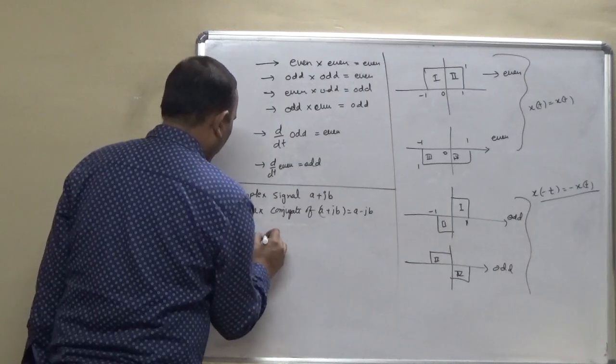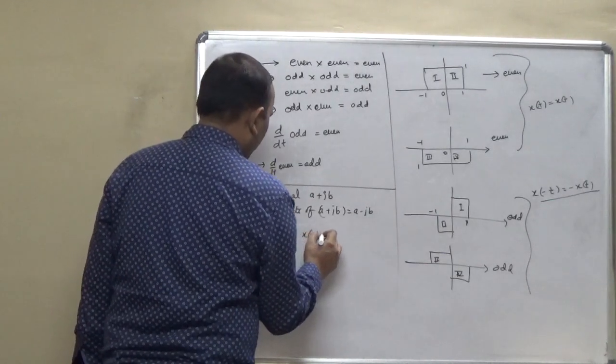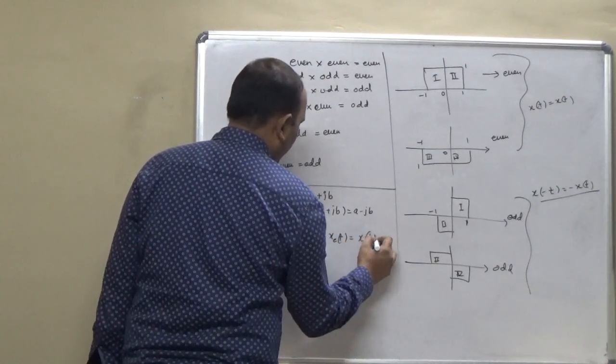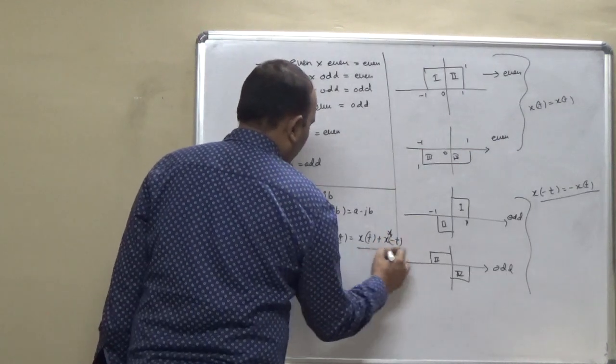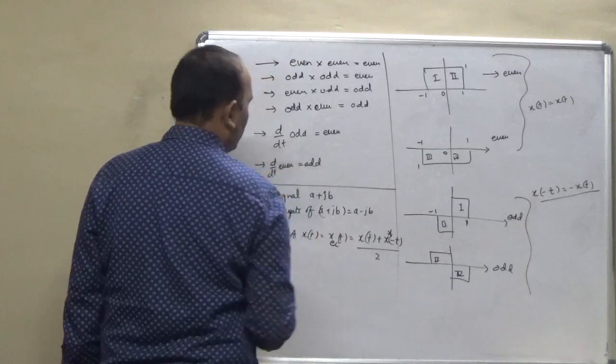Conjugate even part of x(t), x_even(t) is equal to x(t) plus x asterisk minus t divided by 2. So, just write it as x even conjugate.